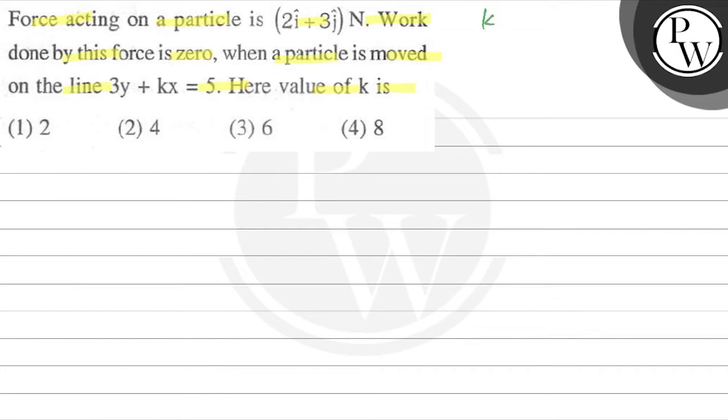The key concept: work done, that is F dot S, is equal to zero. So F must be perpendicular to the displacement. F must be perpendicular to the displacement.